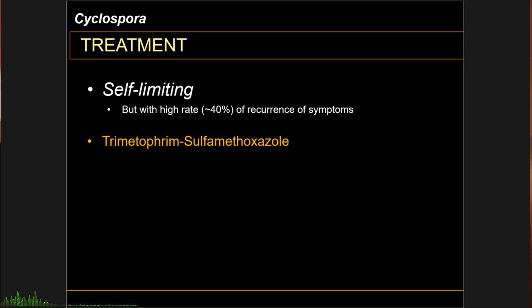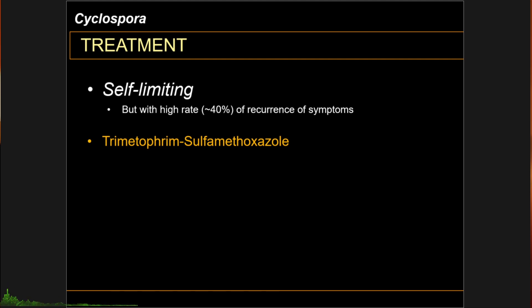Similar to Cryptosporidium infections, modified acid-fast or safranin stains can also be used. Cyclosporiasis infections are usually self-limiting, primarily in immunocompetent individuals. However, there is a high rate of recurrence of symptoms even without reinfection. Treatment may be recommended using trimethoprim-sulfamethoxazole combination drugs. As an alternative, ciprofloxacin can be used.